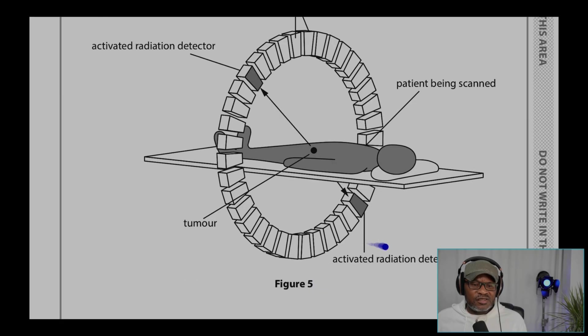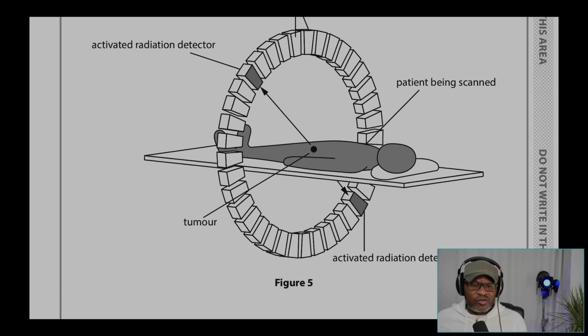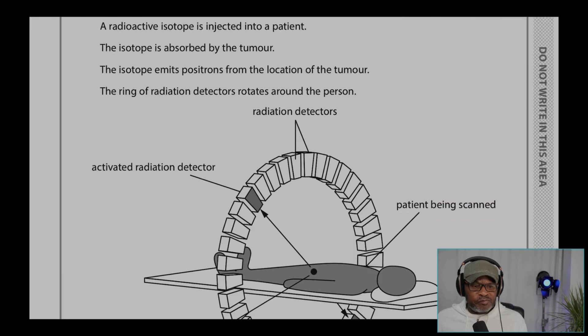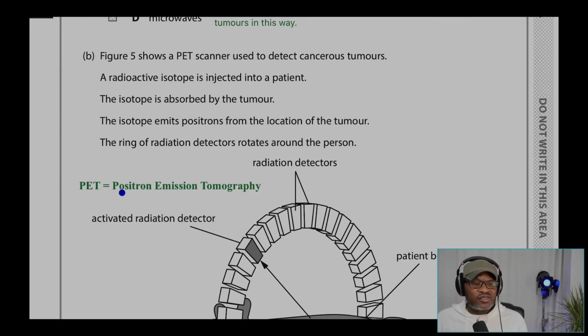And you can see, again, active radiation detector here. So what is going on in this situation? Well, we know that a positron is going to be emitted as a positron here. So what does PET stand for? PET stands for positron emission tomography. Here is a positron that is released.